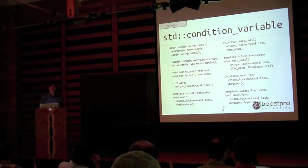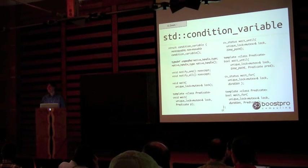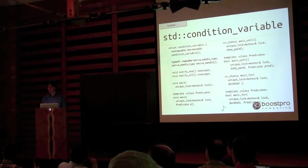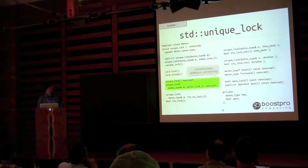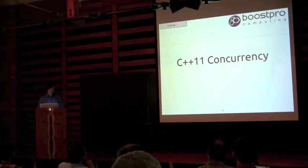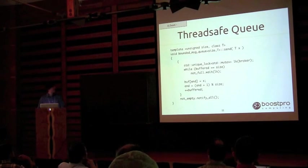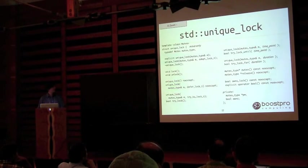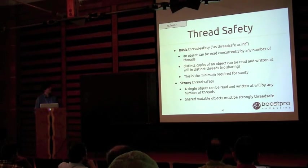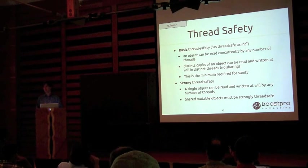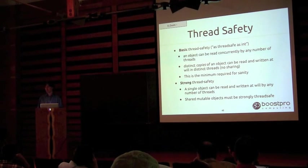Basic thread safety is basically like dealing with fundamental types or functional languages where everything is a value. You have objects being copied everywhere. Everyone has their own independent version — there can't be an invalid state by the time you receive it.